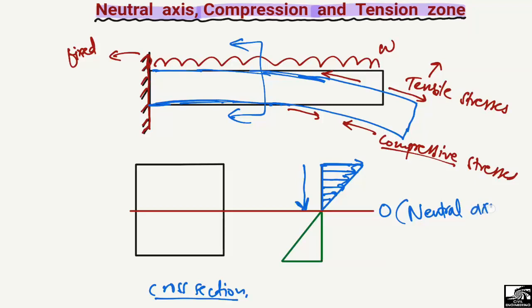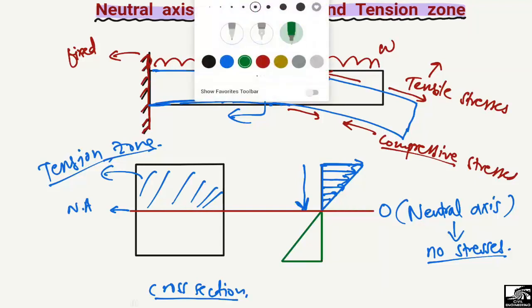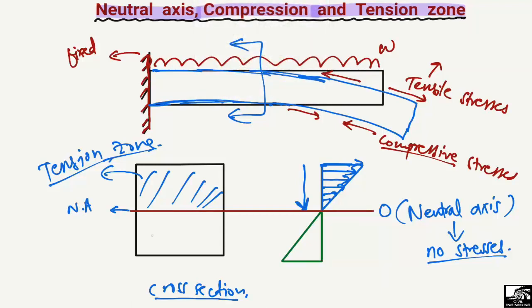This point or axis is known as the neutral axis of the beam — the axis where there are no compressive stresses and no tensile stresses; it is the axis free of stresses. Above the neutral axis is completely a tension zone for the cantilever, and below the neutral axis we have the compression zone.